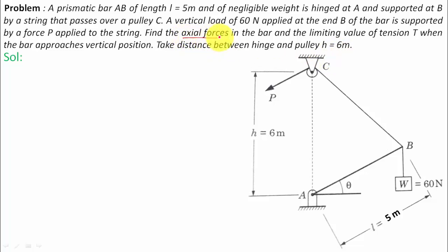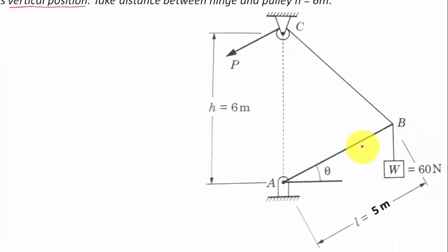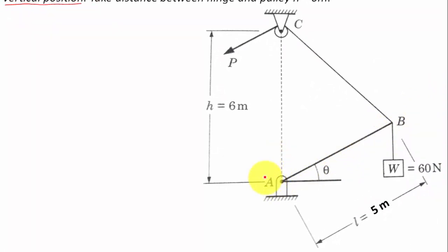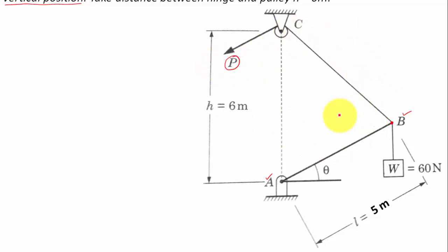We need to calculate the axial force in the bar and the limiting value of tension T when the bar approaches vertical position. The arrangement has bar AB with one end hinged at A, while the other end at point B has a string attached which passes over a pulley C. A force P acts constantly to keep the entire arrangement in equilibrium.